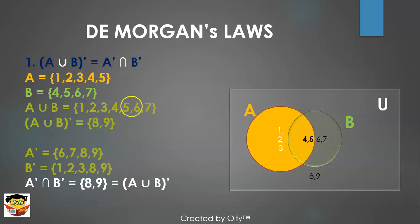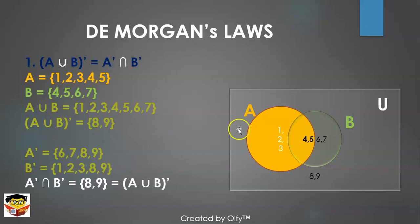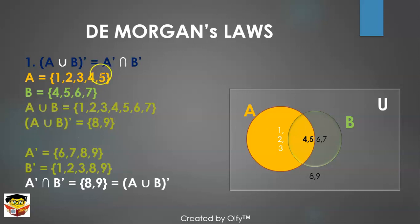For the left-hand side, we first find A∪B, which includes all elements of A and B: one, two, three, four, five, six, seven — not including four and five twice, since elements of a set are distinct. The complement of A∪B is everything outside of A∪B, which gives us eight and nine. So our left-hand side equals {8, 9}.